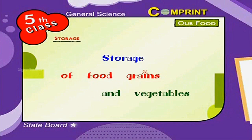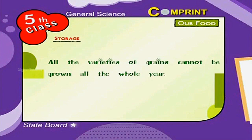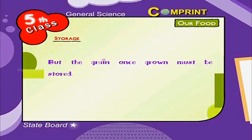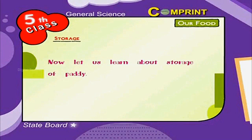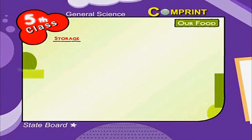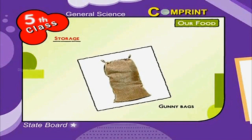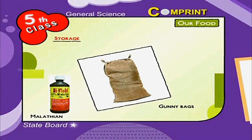Storage of food grains and vegetables. All varieties of grains cannot be grown all year. But the grain once grown must be stored. If we don't store them carefully, insects and rats will spoil them. Paddy is stored in gunny bags, and Malathion pesticide is sprayed on these bags or drums.